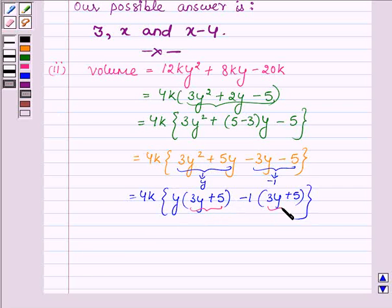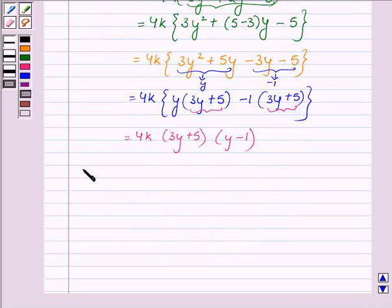Now taking (3y + 5) common, we have 4k times (3y + 5) times (y - 1), and thus the volume is equal to 4k(3y + 5)(y - 1).